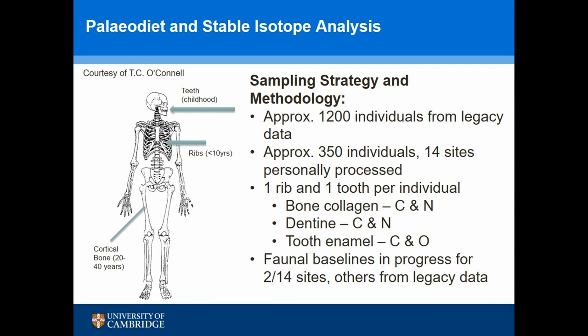From ribs I get carbon and nitrogen for diet. I'm also taking teeth — I can use the tooth root dentine to look at diet carbon and nitrogen, using mostly second premolars and second molars because they form at roughly the same time, to look at post-weaning childhood signatures. So I'm looking at individuals at the beginning of life as well as close to end of life. The tooth enamel also allows me to do carbonate analysis, giving me another carbon proxy to help sort out freshwater fish.